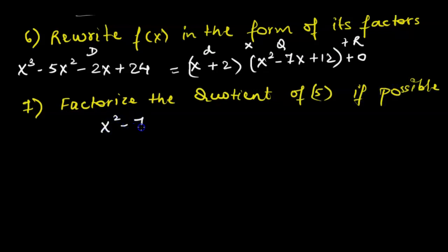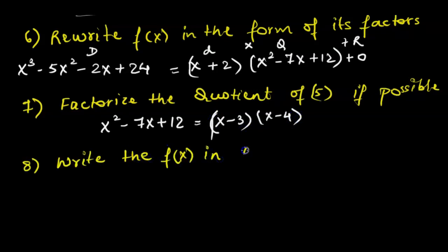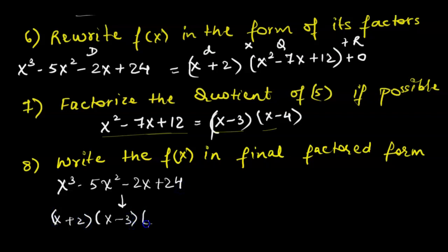Step seven: factorize the quotient obtained in step five if possible. The quotient x² − 7x + 12 is a trinomial; we find two numbers with sum −7 and product 12, which are −3 and −4. So it factors as (x − 3)(x − 4). Step eight: write the polynomial in final factored form. Therefore x³ − 5x² − 2x + 24 = (x + 2)(x − 3)(x − 4). This is how we use factor theorem and synthetic division to factor a standard form polynomial.